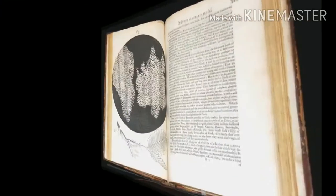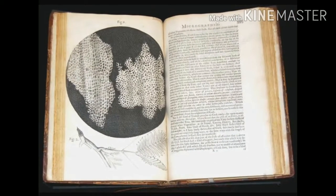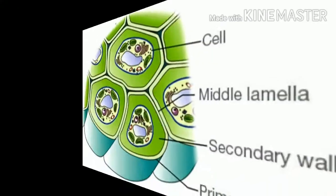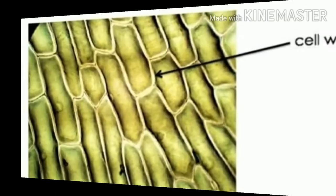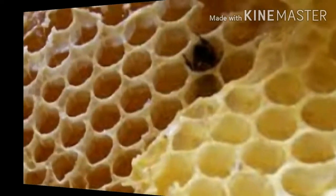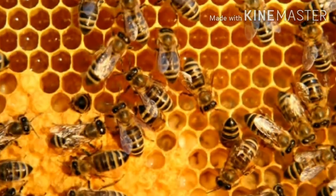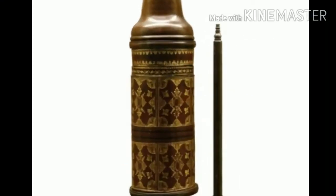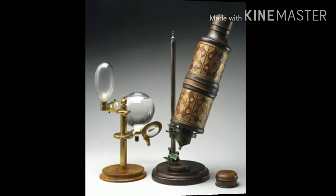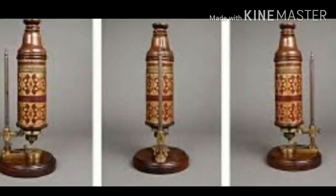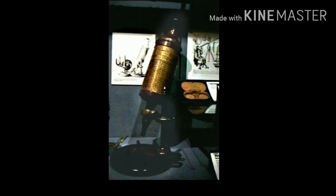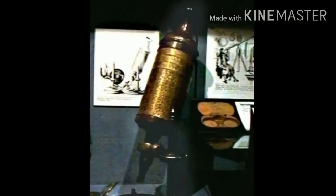Robert Hooke coined the term 'cell' in a drawing of a microscopic structure of cork. He showed walls surrounding empty spaces and referred to these structures as cells, suggesting plant structures' resemblance to honeycomb cells. The uncrafted microscope he used to make the observations from Micrographia is on display at the National Museum of Health and Medicine in Maryland.